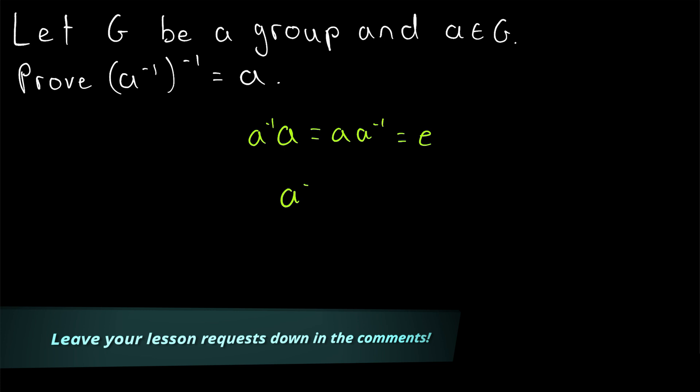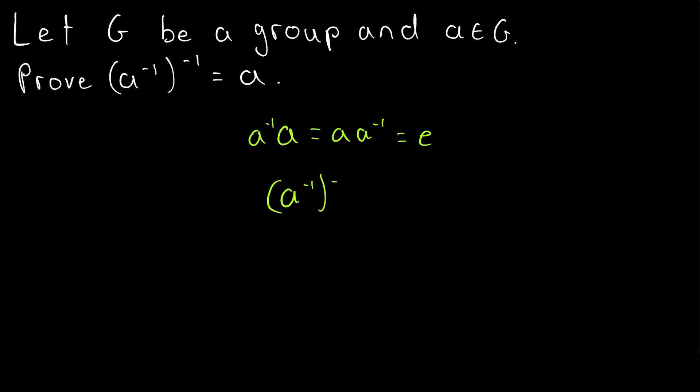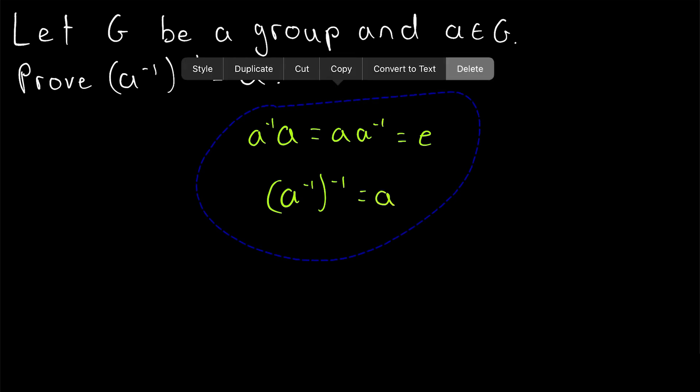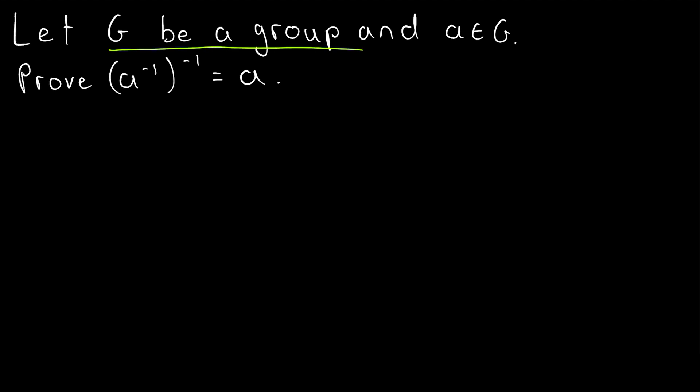But what is the inverse of that inverse of A? Well, it turns out the inverse of the inverse is just the original element, which is what we'll prove in today's Wrath of Math lesson. Let G be a group and A an element of G. We're going to prove that the inverse of the inverse of A is equal to A.